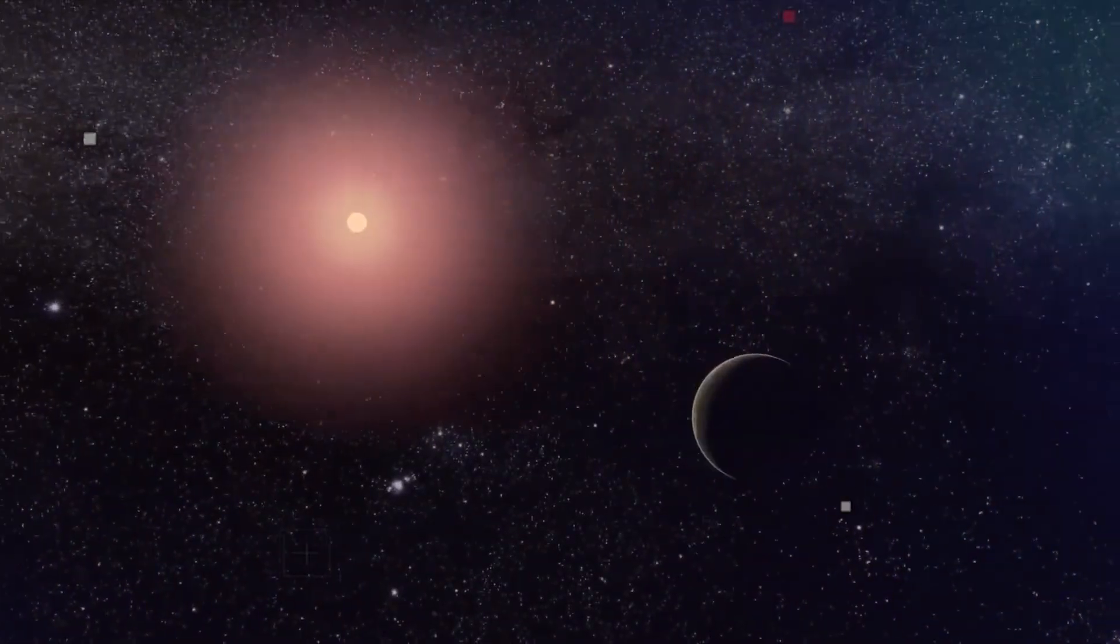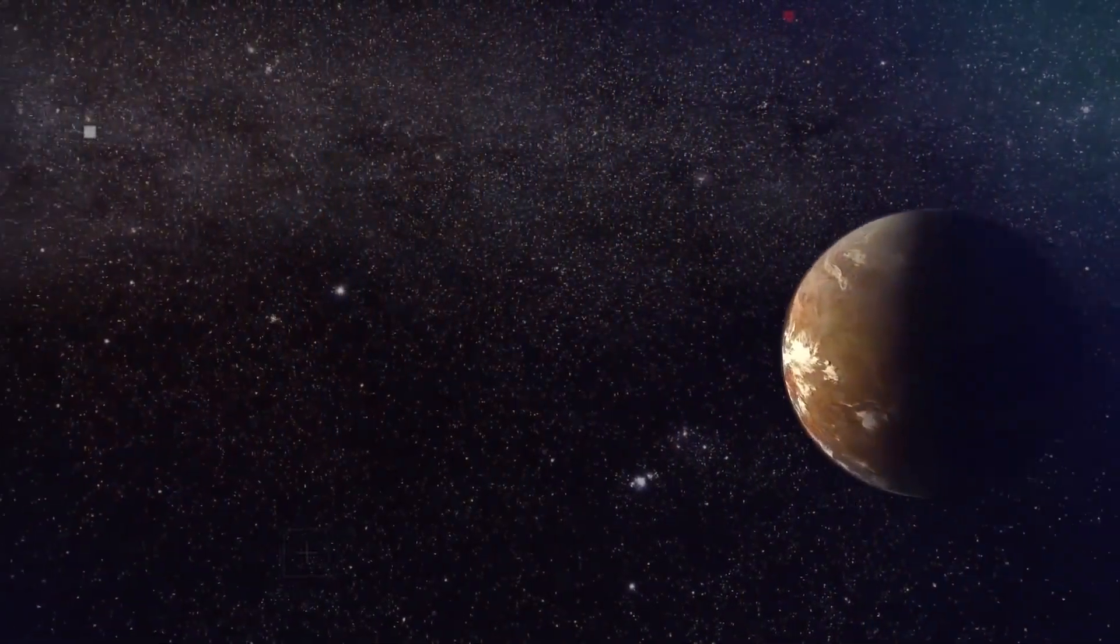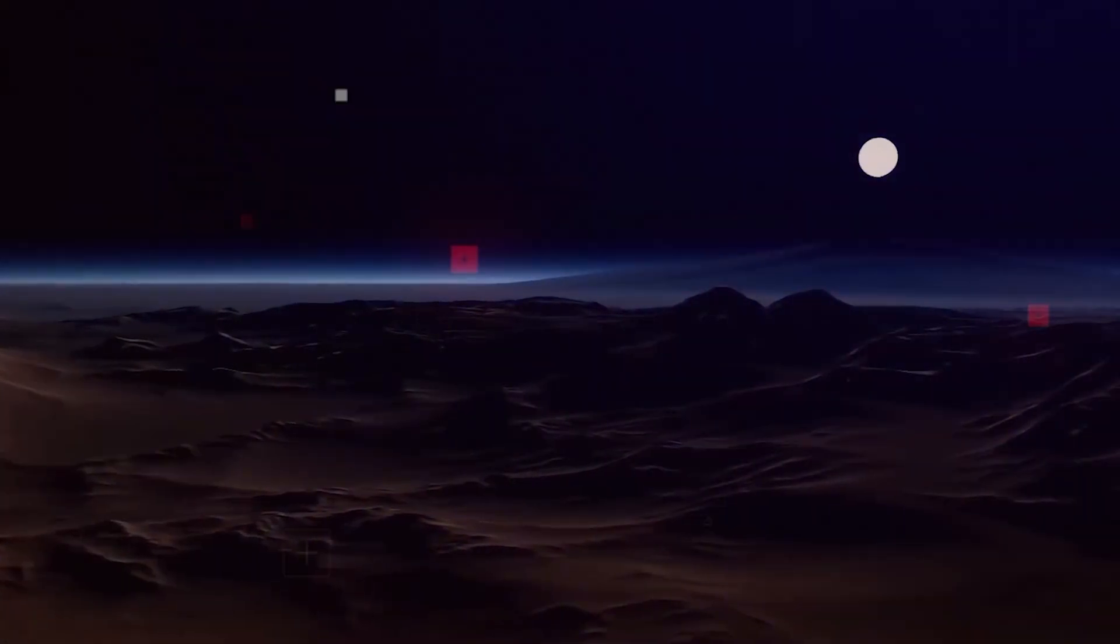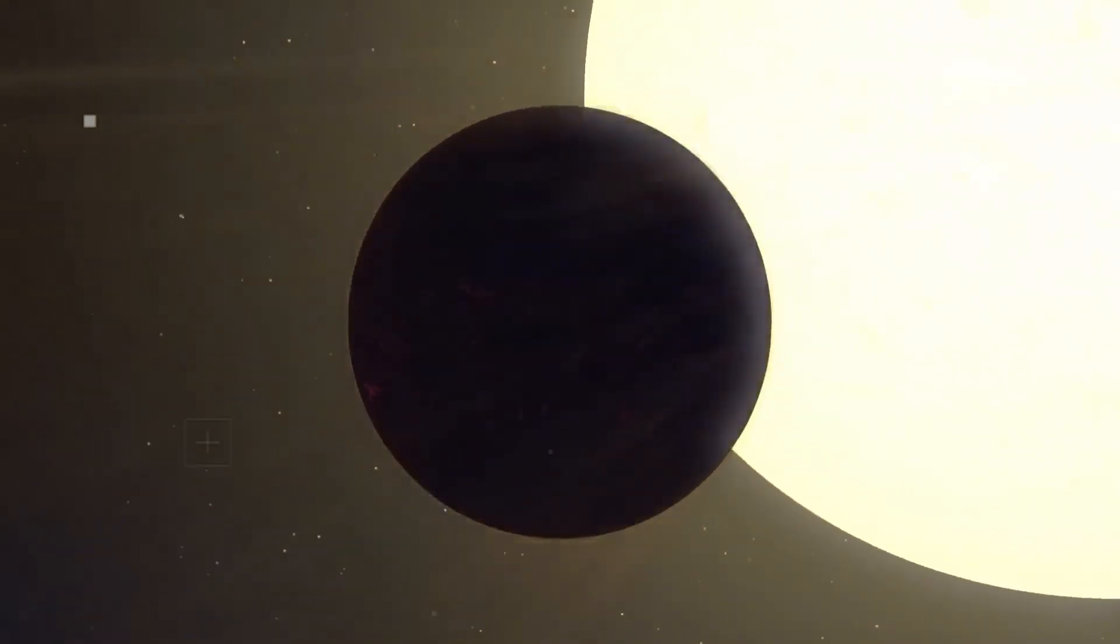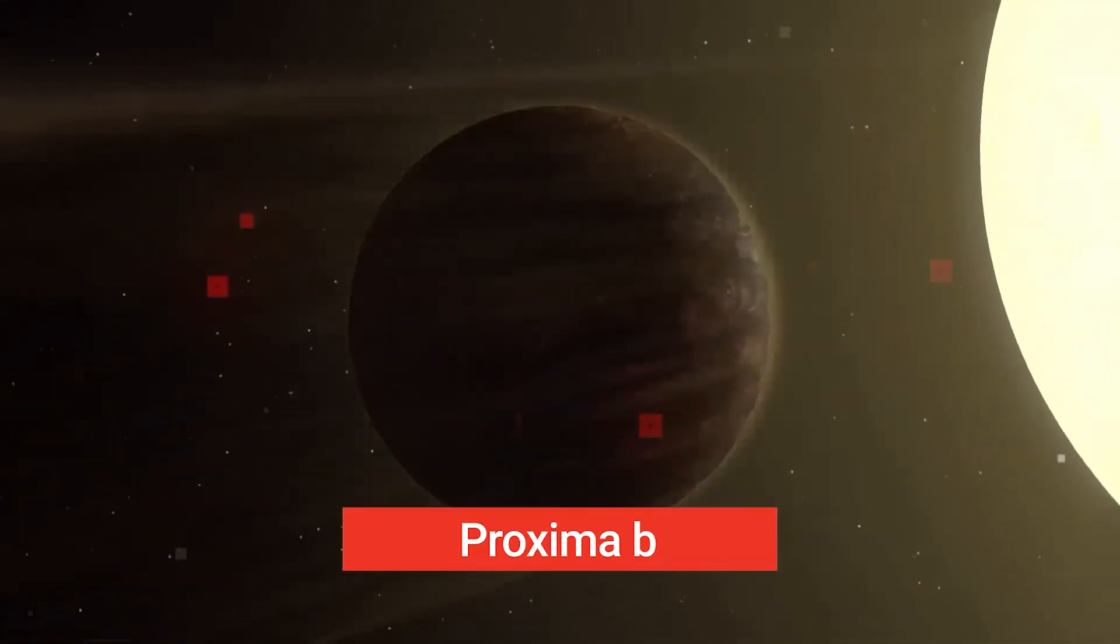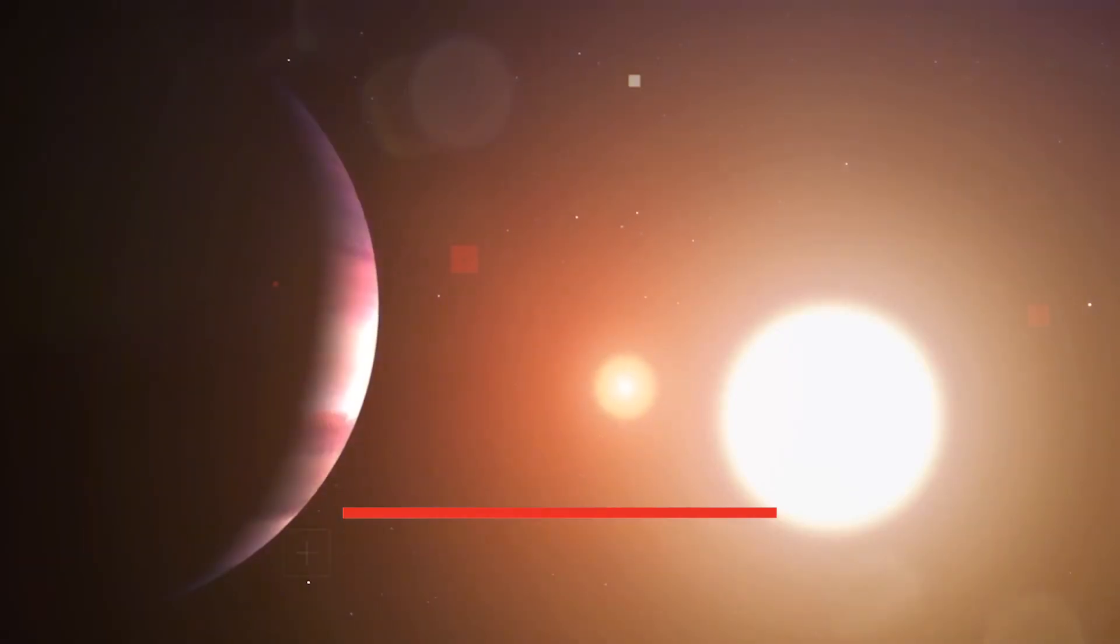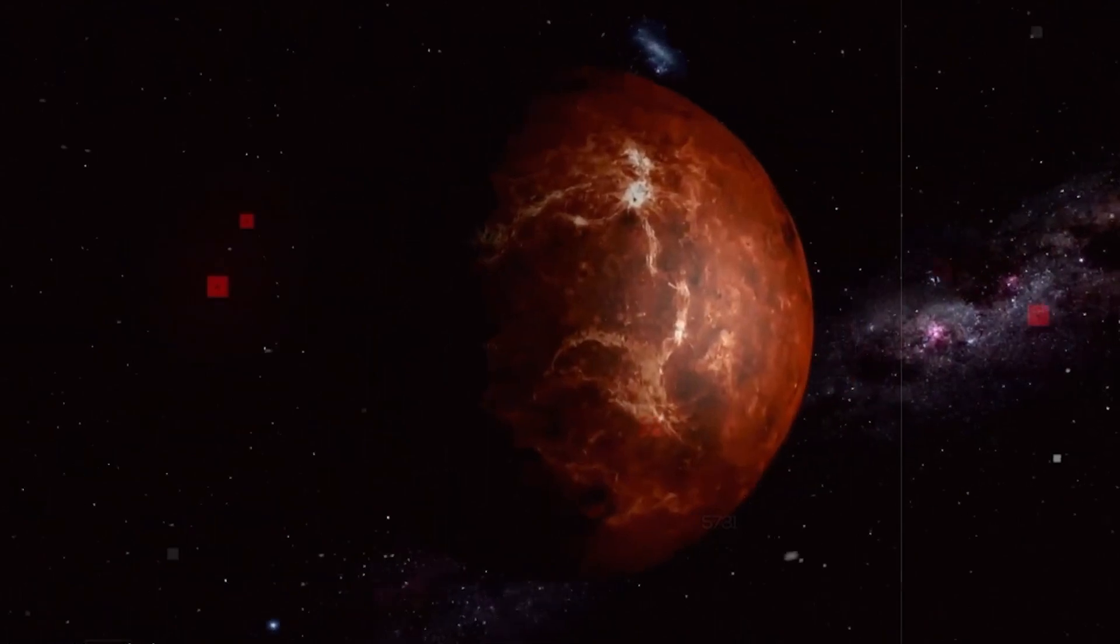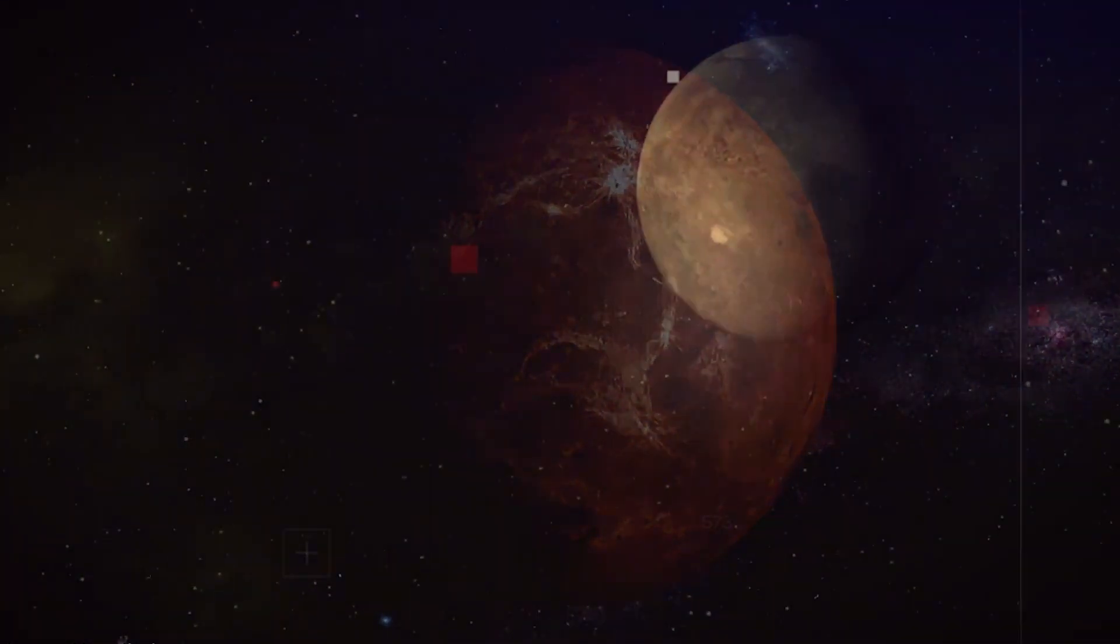Today we're diving into the forefront of space exploration. The James Webb Space Telescope has shattered barriers once again, revealing a breathtaking glimpse of Proxima b, a planet orbiting our nearest stellar neighbor, Proxima Centauri. Stay with us till the end of this video to know more.